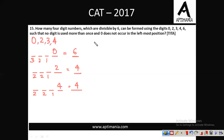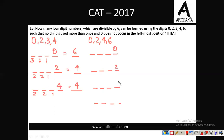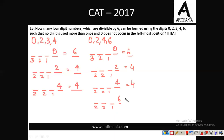Second combination: {0, 2, 4, 6} — sum is 12, divisible by 3. Four cases for units digit: 0, 2, 4 or 6. For 0 at units: 3 × 2 × 1 = 6. For 2 at units: 2 × 2 × 1 = 4. For 4 at units: 4. For 6 at units: 4. Total for this combination: 6 + 4 + 4 + 4 = 18 numbers.